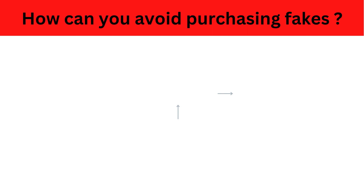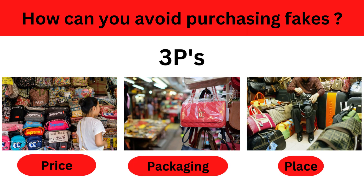To avoid purchasing fake products, look for three P's: Price, Packaging, and Place. If the price looks too good to be true, it probably is. If the product is being sold without its packaging, or the packaging appears low quality or includes printing or naming errors, it's probably counterfeit. For Place, whether buying in-store or online, check the website properly — look at the contact page and frequently asked questions page.